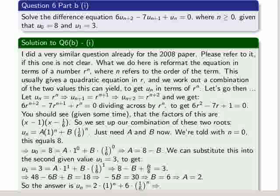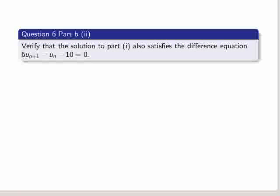u_n equals 2 times 1 to the power of n plus 6 times (1/6) to the power of n. 1 to the power of n is always 1, no matter what n is. So we get that again. We can change that 2 multiplied by 1 to the power of n to be just 2. So that is our result for this section.